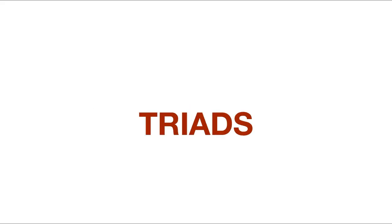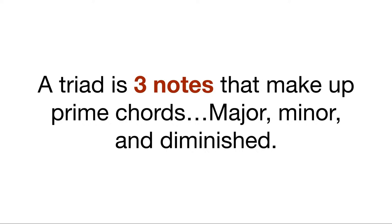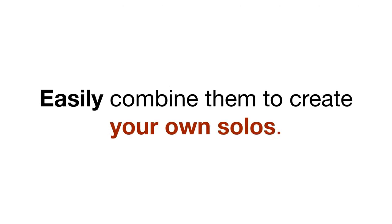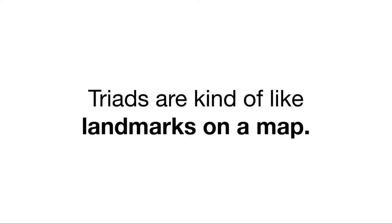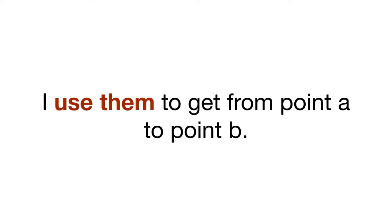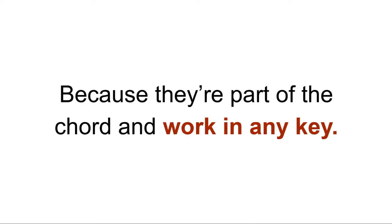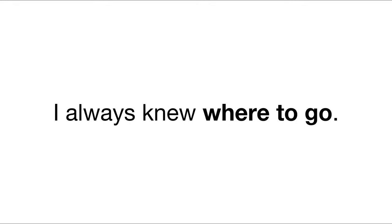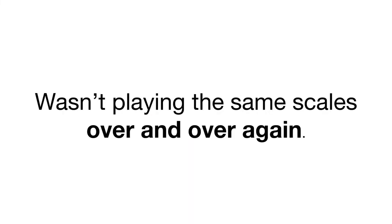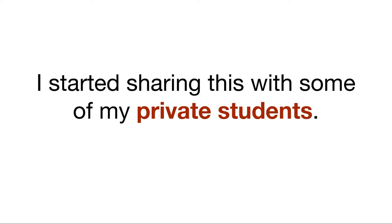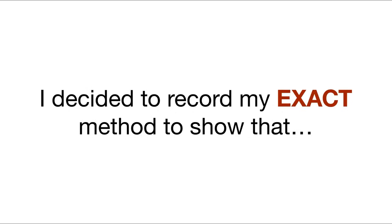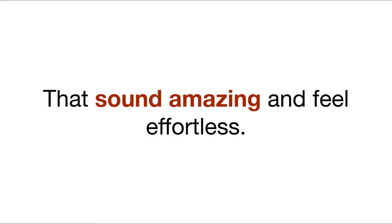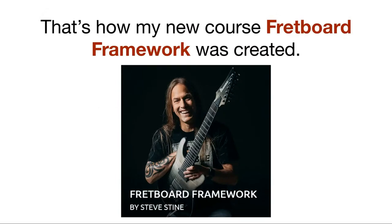I realized you just really need to know triads — three notes that make up prime chords like major, minor, and diminished. When you can see those three types of triads on your fretboard, you'll play songs faster than ever and easily combine them to create solos. Triads are like landmarks on a map — I use them to get from point A to point B on the fretboard, and they sound great because they're part of the chord and work in any key. That's how my new course, Fretboard Framework, was created.